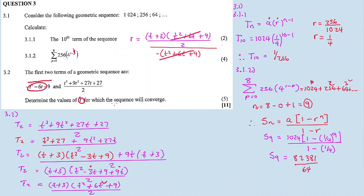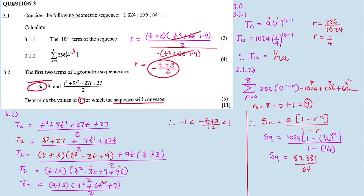So r = -(t + 3)/2. The sequence converges only if r is between -1 and 1, i.e., -1 < -(t + 3)/2 < 1. We need to solve this linear inequality for t. Since there is a fraction, we multiply everything by 2: the 2 cancels, giving -2 < -(t + 3) < 2.